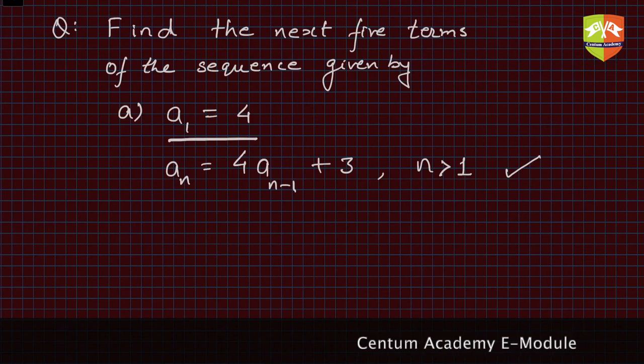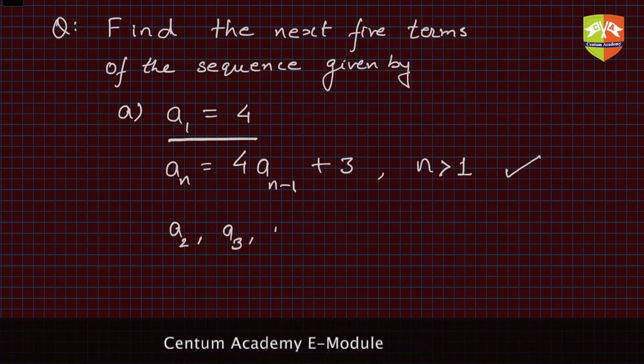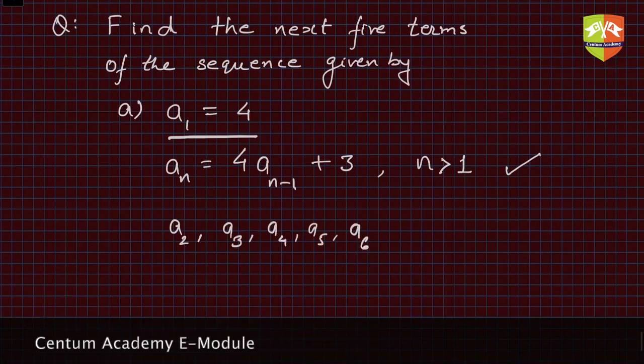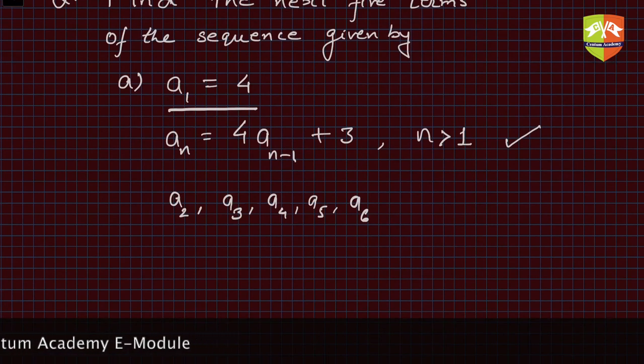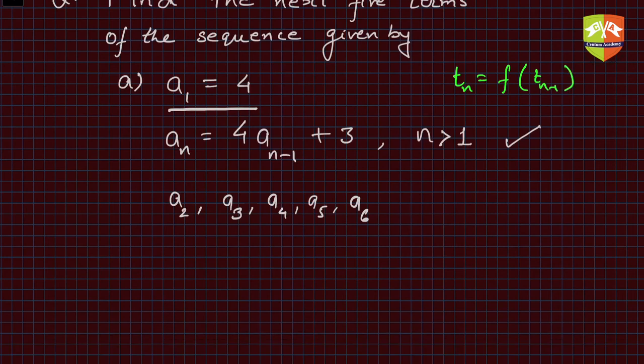We have to find out a2, a3, a4, a5, and a6—these are the next five terms. If you remember what we discussed in the previous session, this is the second type of relation where the nth term is a function of previous terms. This is this kind of relationship. Never mind, if the formula is given, we can easily find out a2.